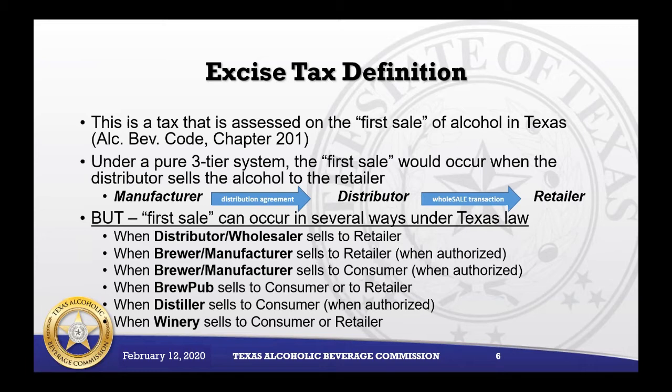Excise tax is a tax that is assessed on the first sale of alcohol in Texas, under Alcohol Beverage Code Chapter 201. Under a pure three-tier system, the first sale would occur when the distributor sells the alcohol to the retailer, or when the manufacturer has a distribution agreement with the distributor and has the wholesale transaction with the retailer.